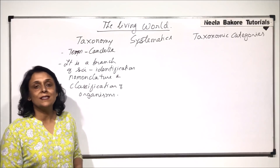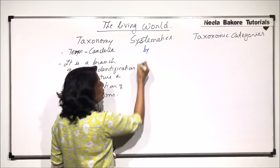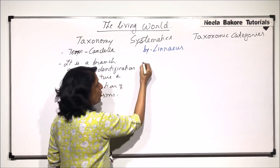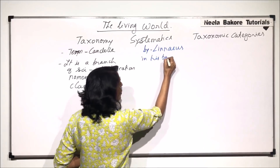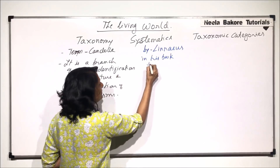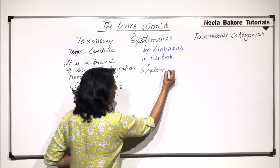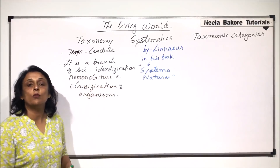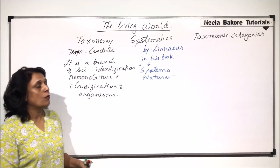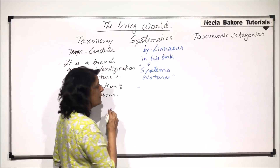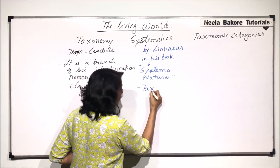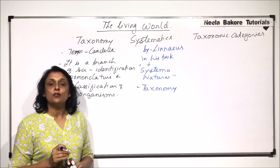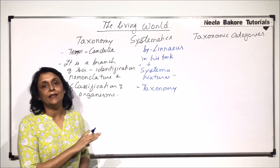Now let us come to the other word: systematics. This word was first used by Linnaeus in his book titled Systema Naturae. In this book, he used the word systematics for the first time. Systematics means taxonomy and the relationship of all the organisms which are in a given category.